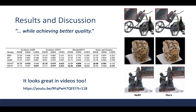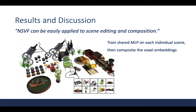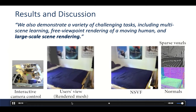It can also be applied for scene editing. Here we train a shared MLP for each scene, and the main difference between each scene is encoded in their voxel embeddings — this is impossible to do with NERF. Finally, for large-scale scene rendering, it has much fewer artifacts than the baseline method shown at the beginning.